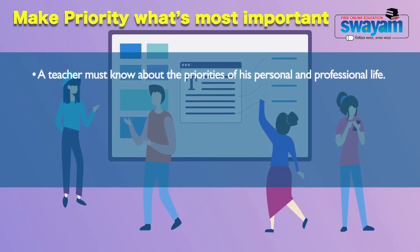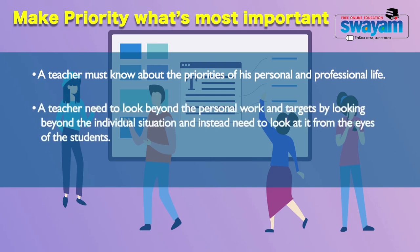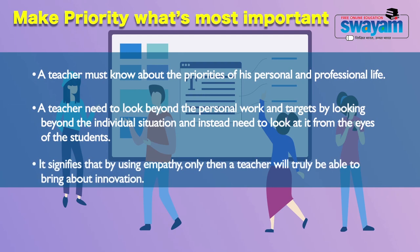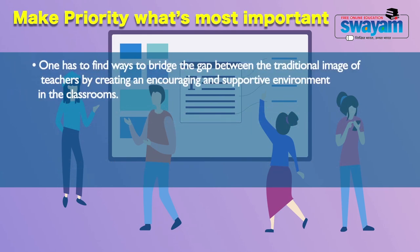But we need to prioritize what is most important. A teacher must know the priorities of personal and professional life. A teacher needs to look beyond personal targets by looking at situations from the eyes of the students — the element of empathy. By using empathy, a teacher will truly be able to bring about innovation. One has to find ways to bridge the gap between the traditional image of the teacher by creating a more supportive environment in class.